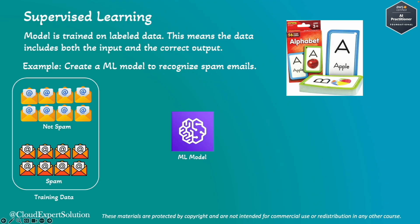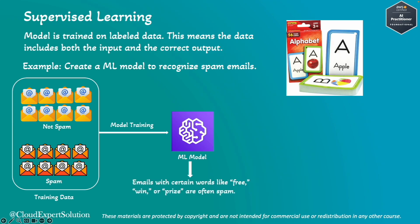We have a labeled dataset. In that labeled dataset, we have some emails marked as not spam versus some emails that are actually spam, and we feed this into the machine learning model. Once we train the model with this labeled data, the model creates relations or correlations between those emails to identify which one is spam versus which one is not. The model may come up with characteristics like: if the email has words like 'free', 'win', or 'prize', then it can be a potential spam email.